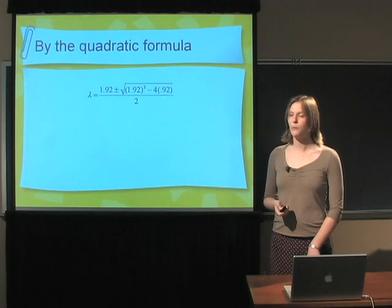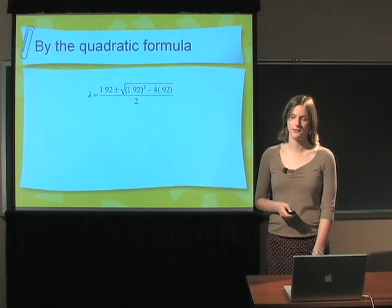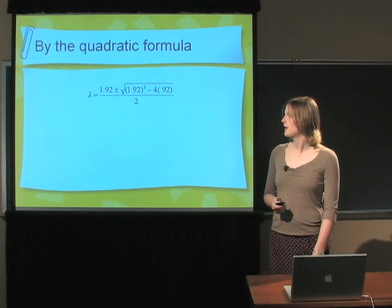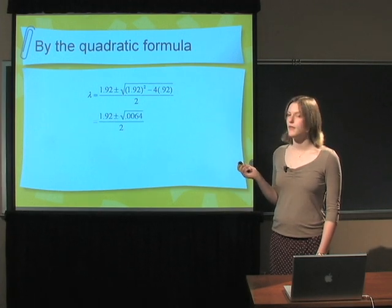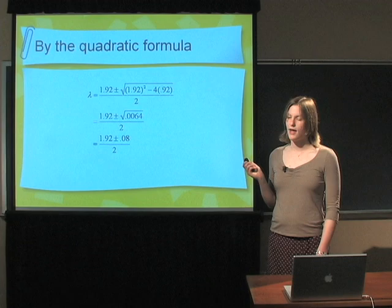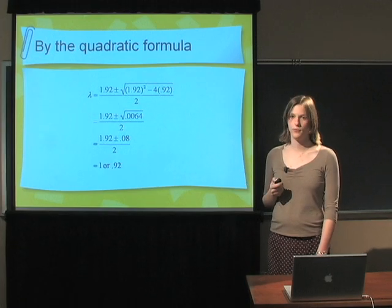So lambda equals 1.92 plus or minus the square root of 1.92 squared minus 4 times 0.92 all over 2. We can simplify that, and then simplify it again, and we find our two eigenvalues to be 1 or 0.92.